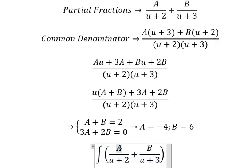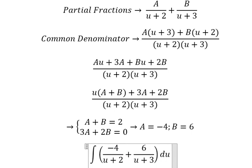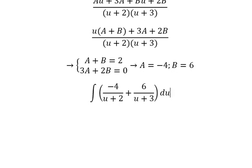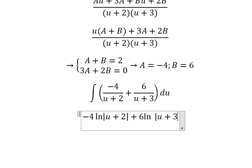So A is negative number 4, B is number 6. And we got du. So we got negative 4 ln of the absolute value of u plus 2, and we have number 6 ln of the absolute value of u plus 3. And we put c in here.